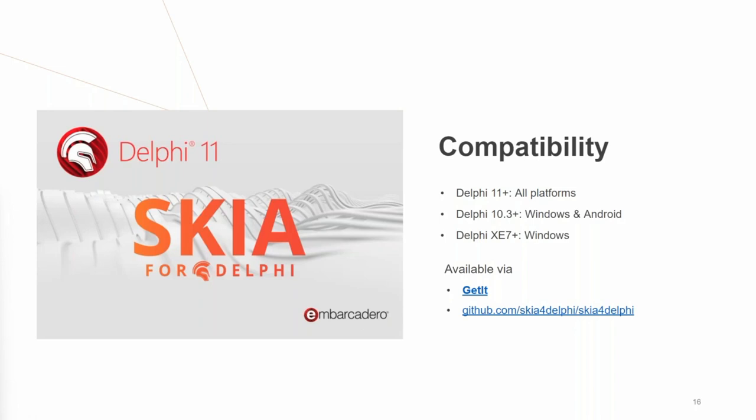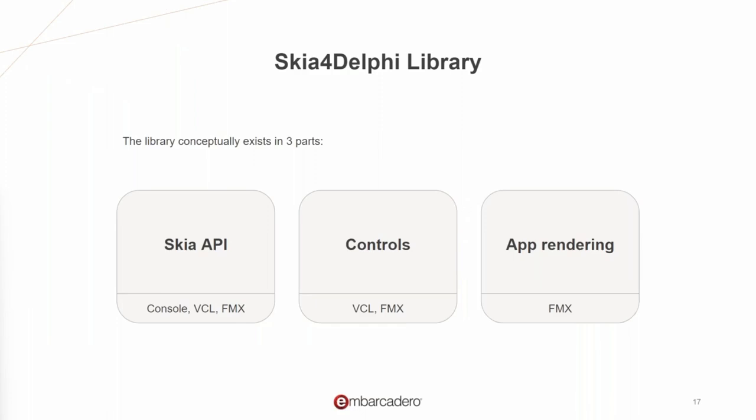Skia for Delphi is not yet available for C++ Builder, but all the source code is on their GitHub repository if you want to help modify it and make a pull request. The library is conceptually divided into three parts: the Skia API, which gives you access to the full Skia API; the controls you can use in your applications; and app rendering support.